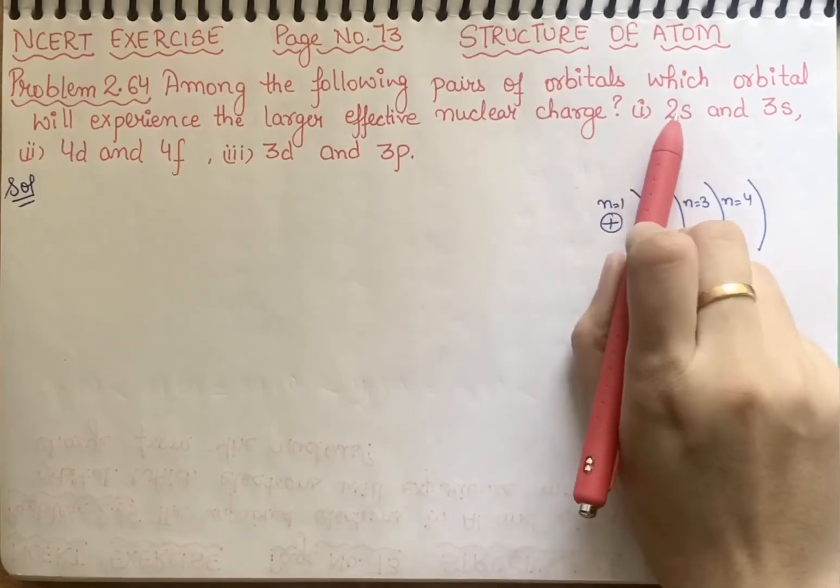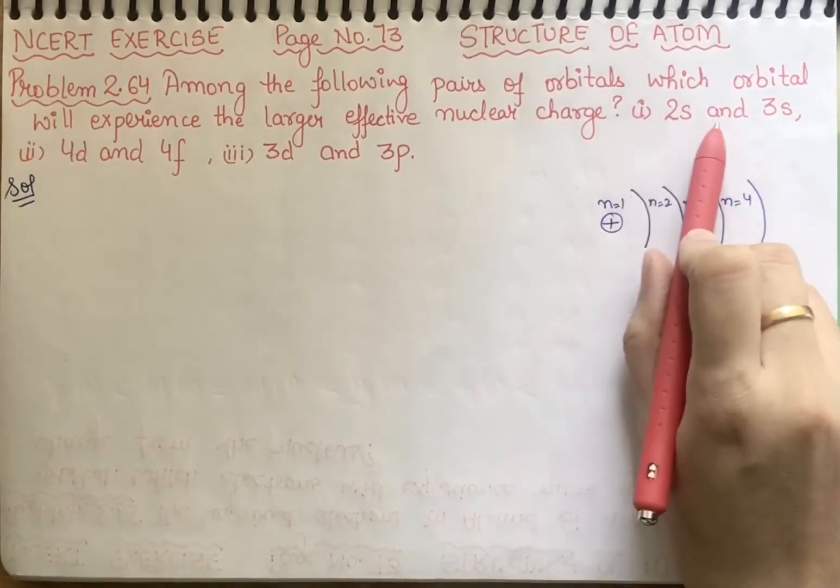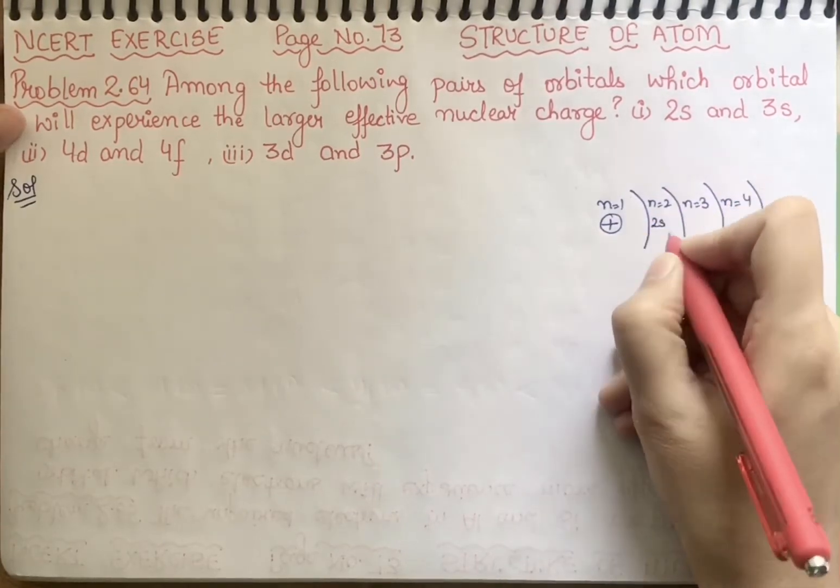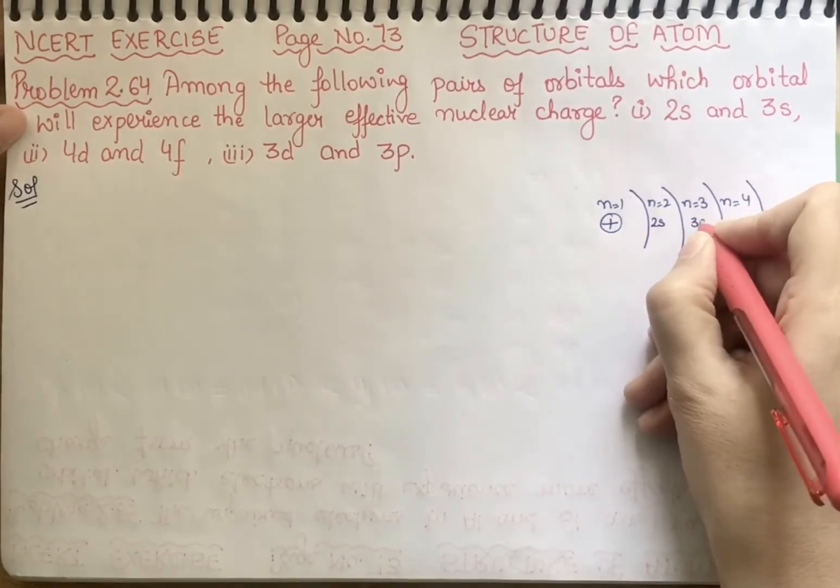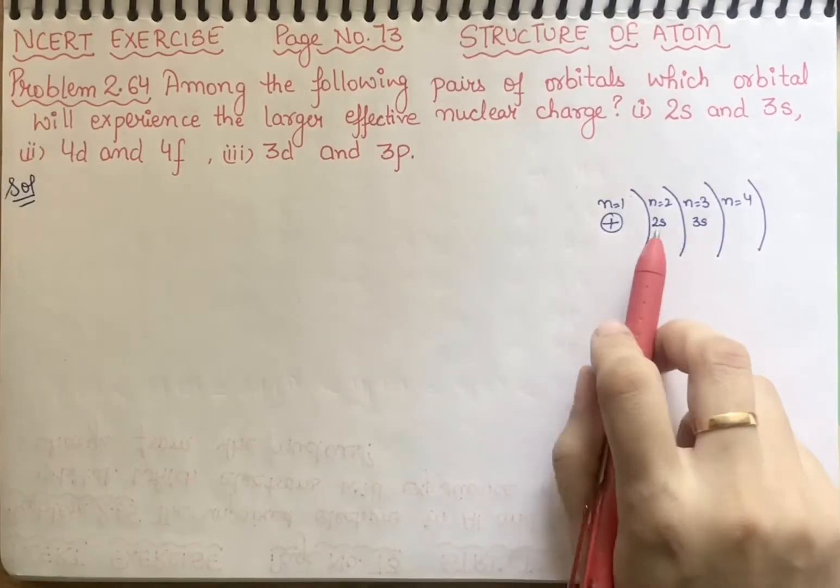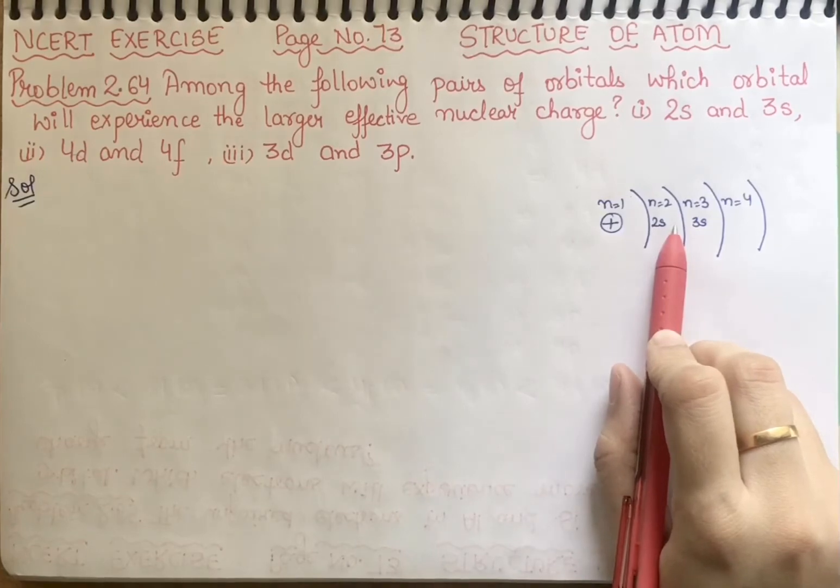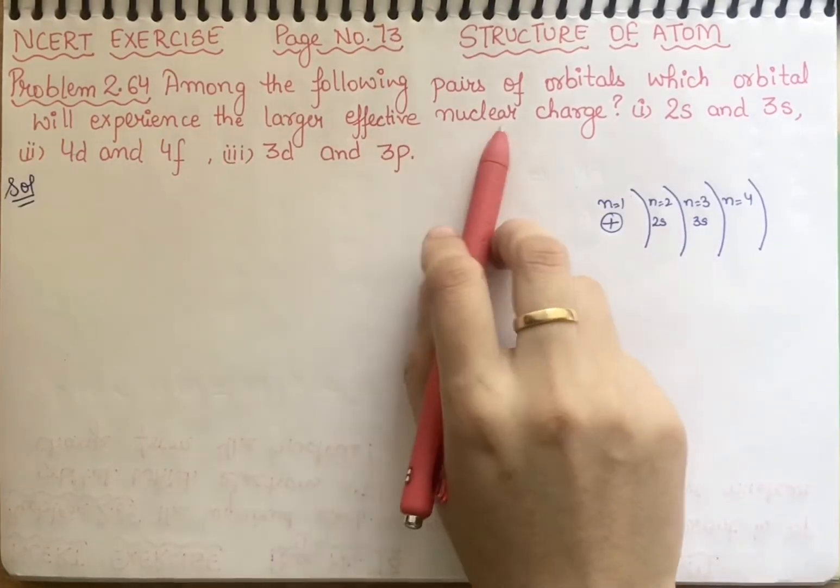So what is the first case? In the first case, 2s and 3s. 2s means that N equals 2 and 3s means that N equals 3. Now, who has the most effective nuclear charge? 2s.